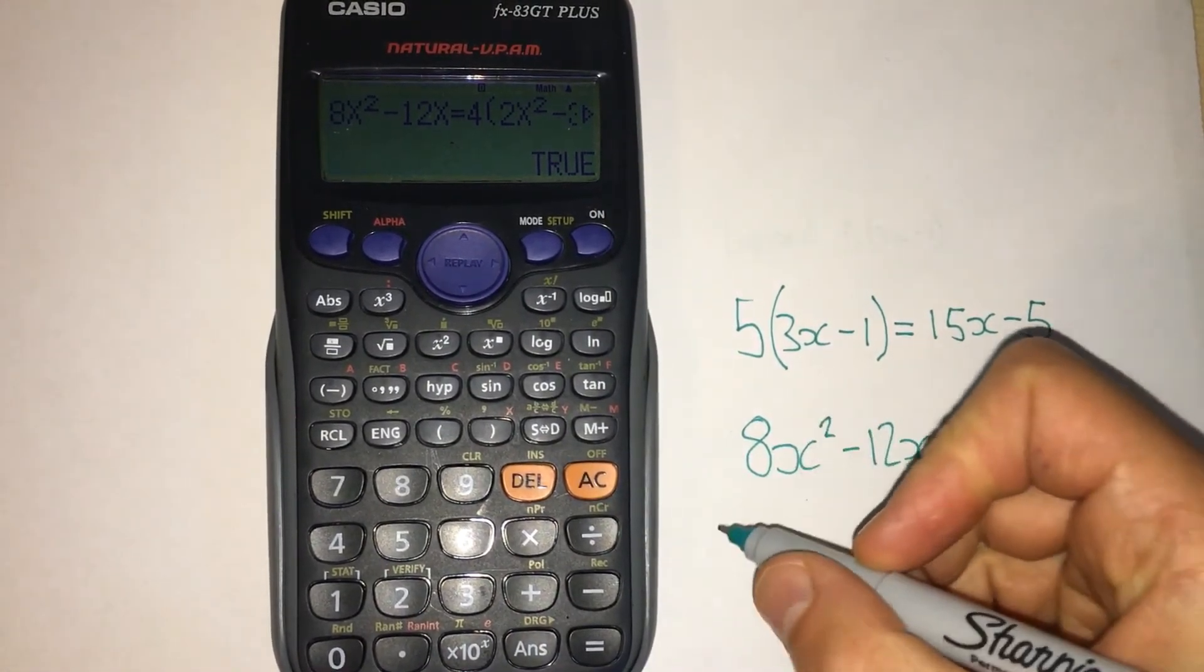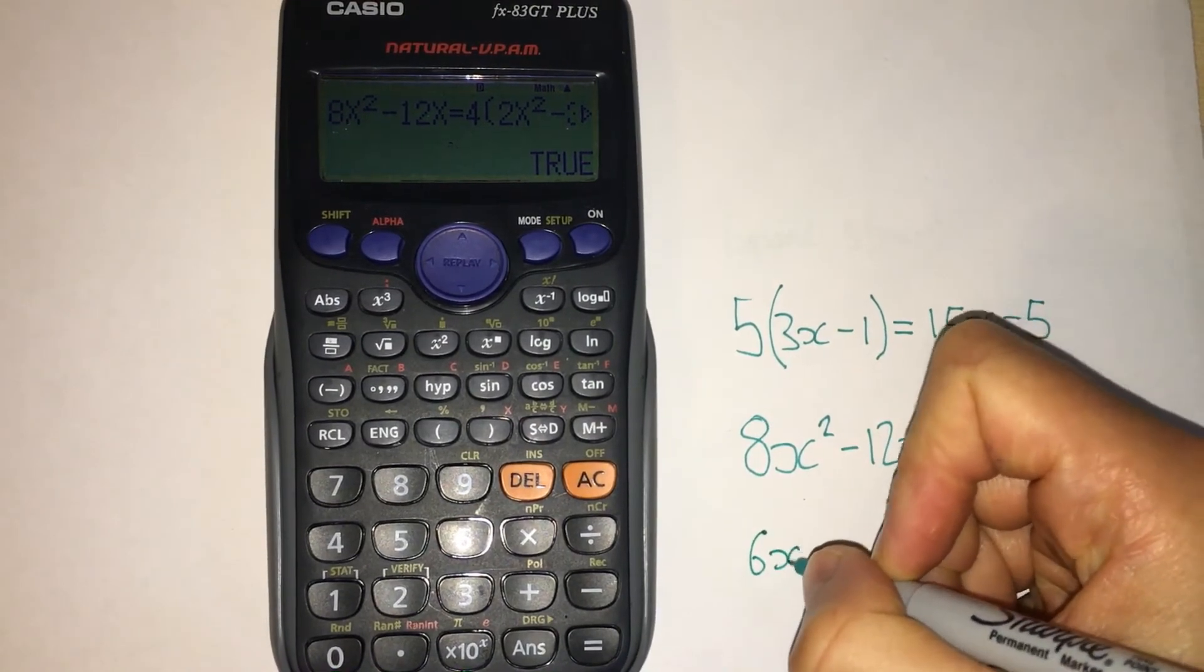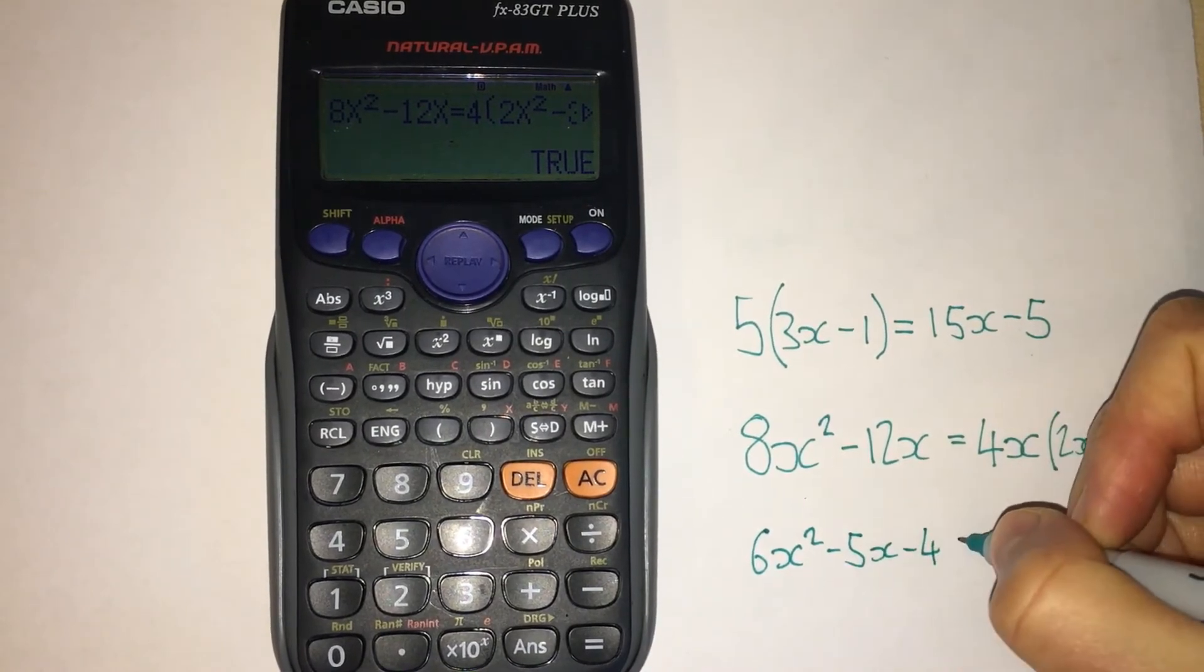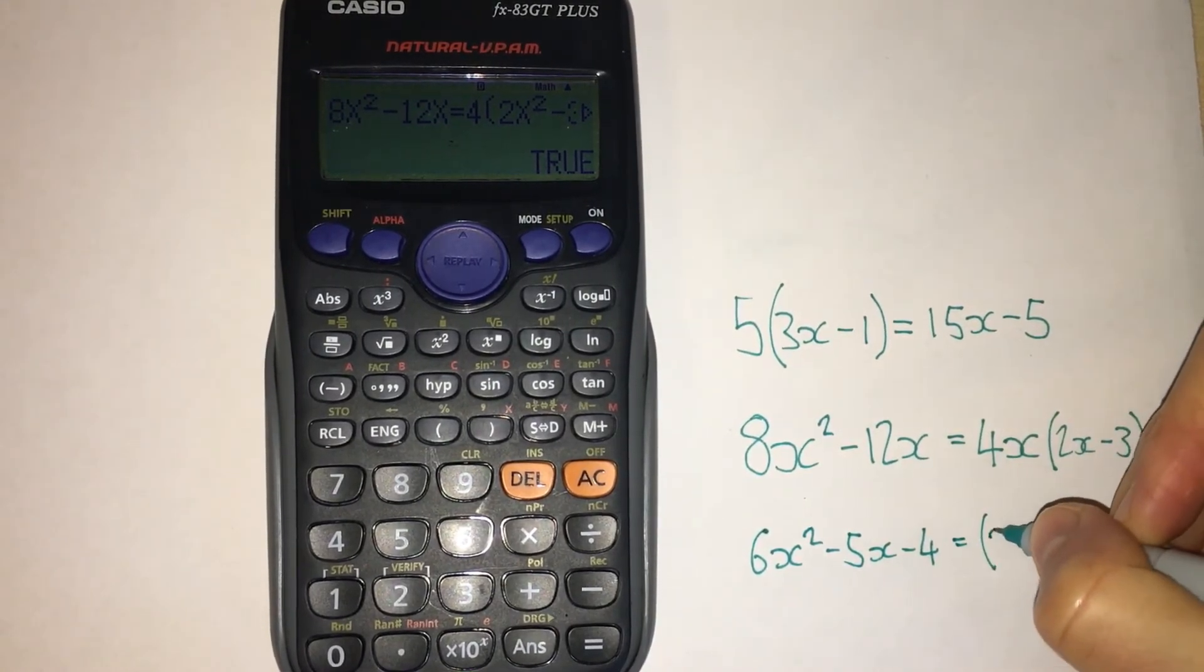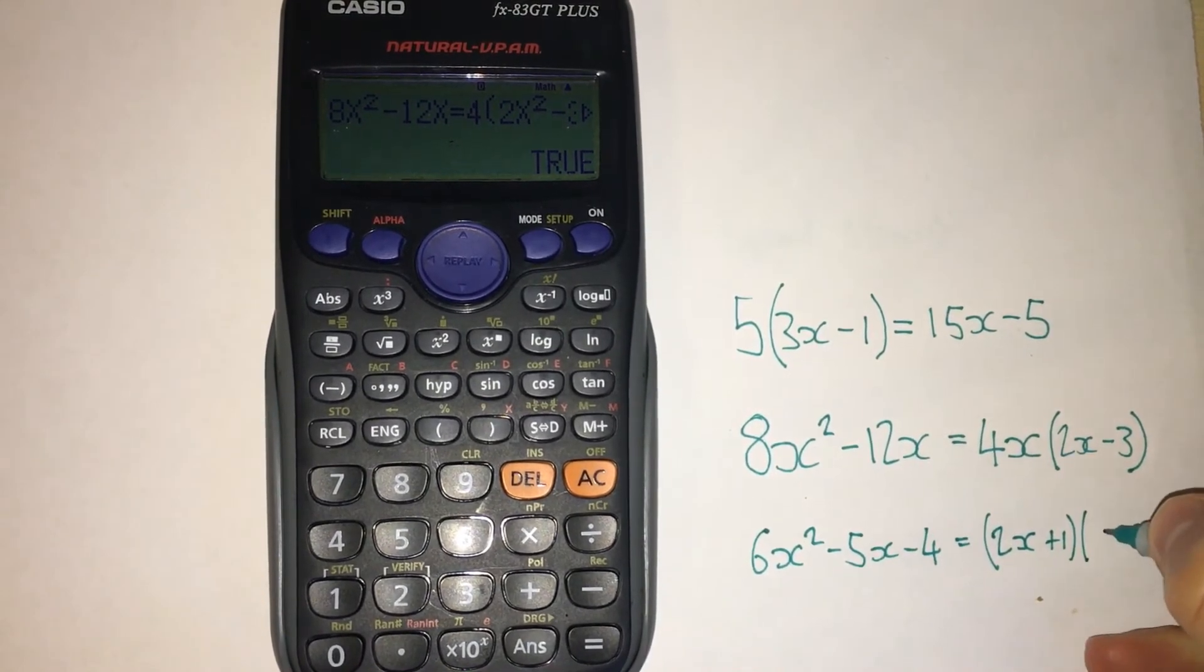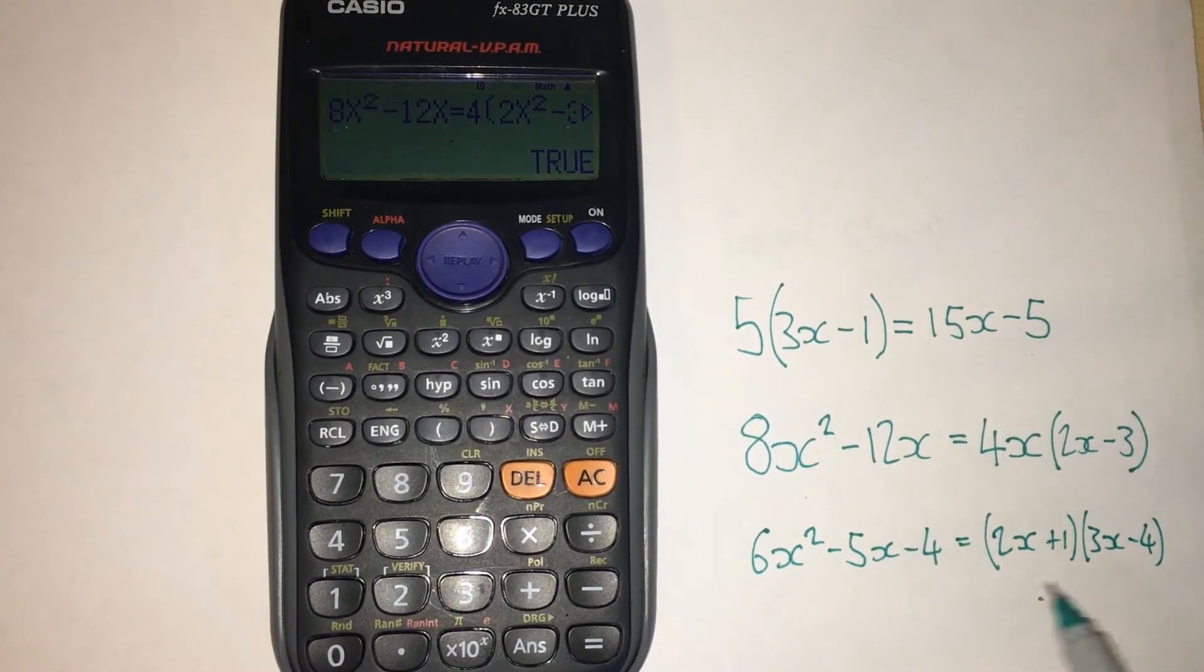Let's do one more. So we could use this for factorizing a quadratic: six x squared minus five x minus four equals, and I think it's two x plus one multiplied by three x minus four.